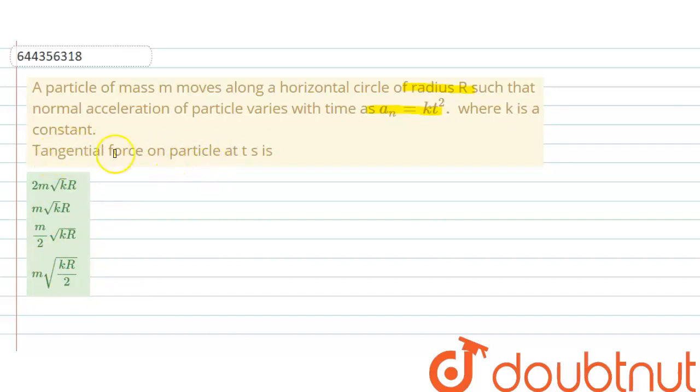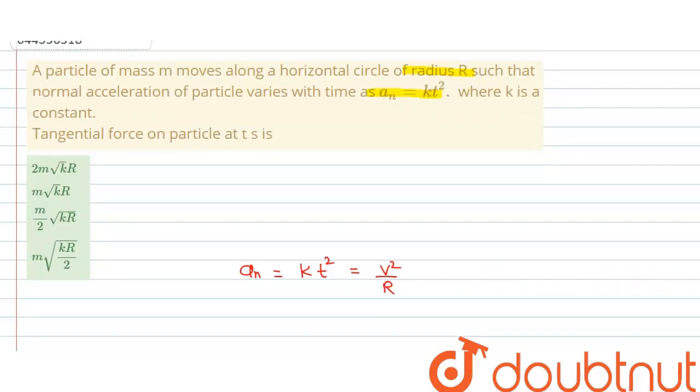For which we have to calculate tangential acceleration. So here given is normal acceleration, and we know that formula for normal acceleration is v²/r, which is given here as kt² equals v² upon r, where v is speed and r is the radius.